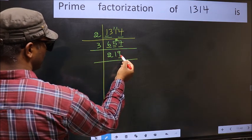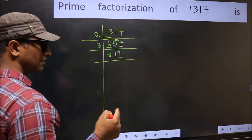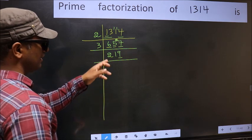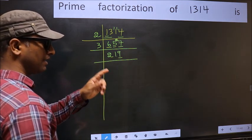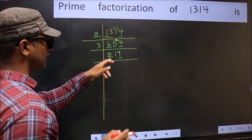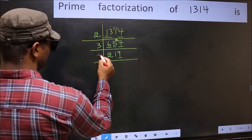Now last digit 9 is not even, so not divisible by 2. To check divisibility by 3, we add the digits. 2 plus 1 plus 9. We get 12. 12 is divisible by 3, so this number is also divisible by 3. So take 3 here.